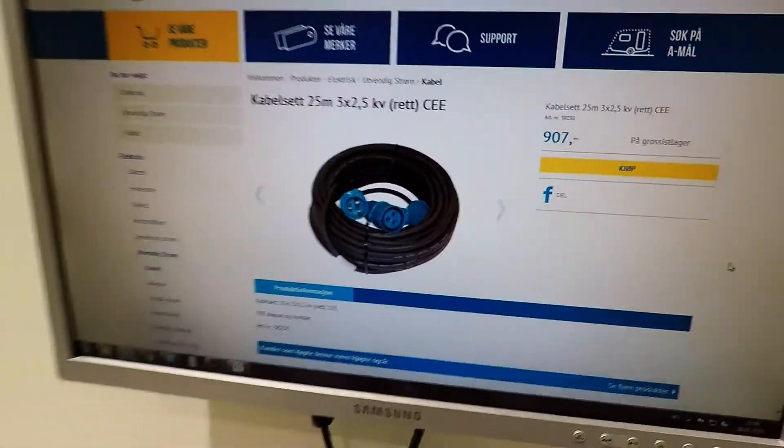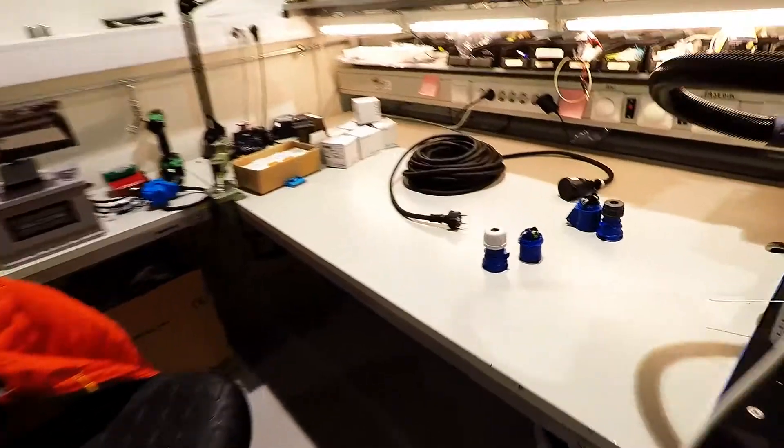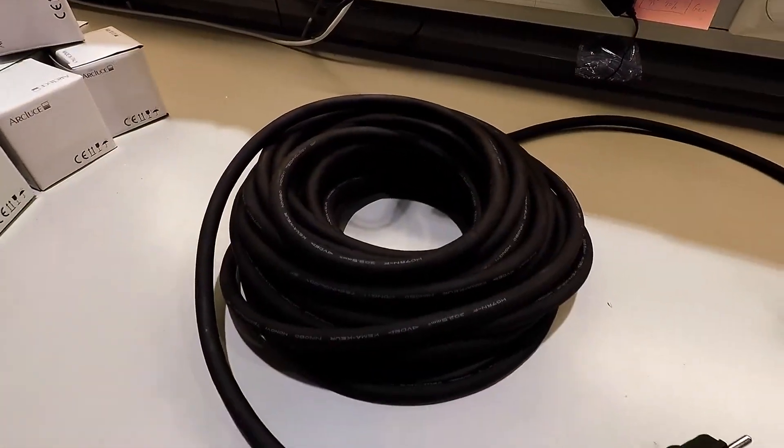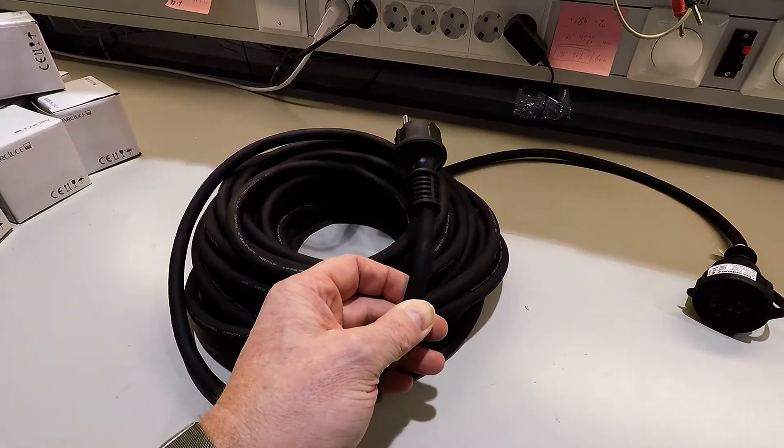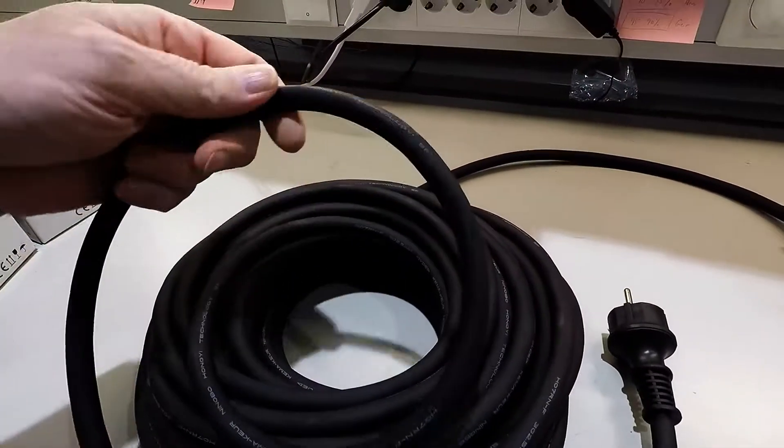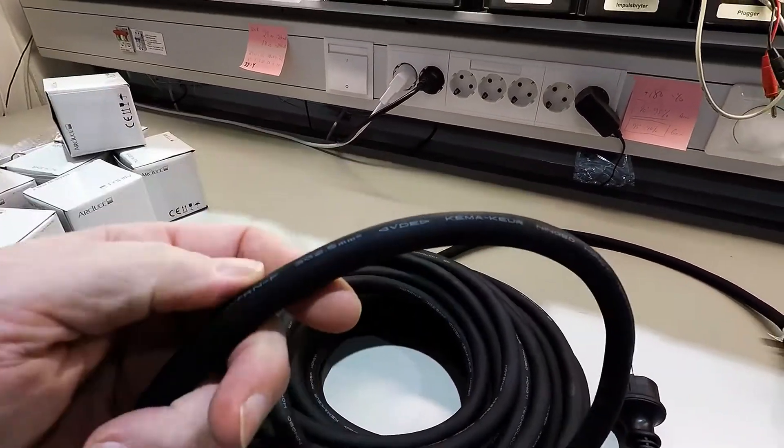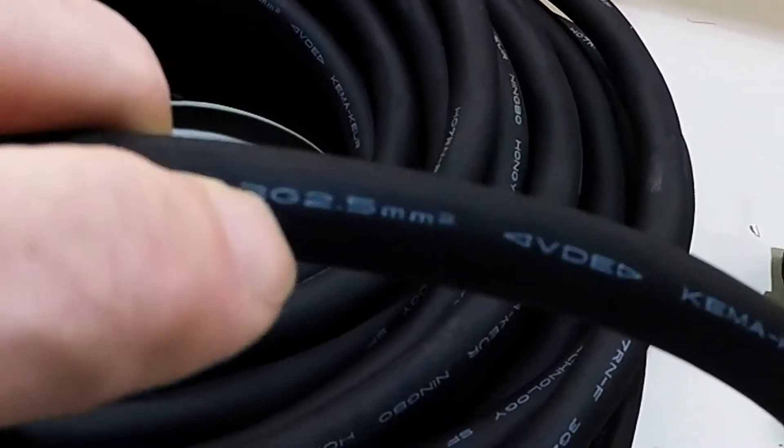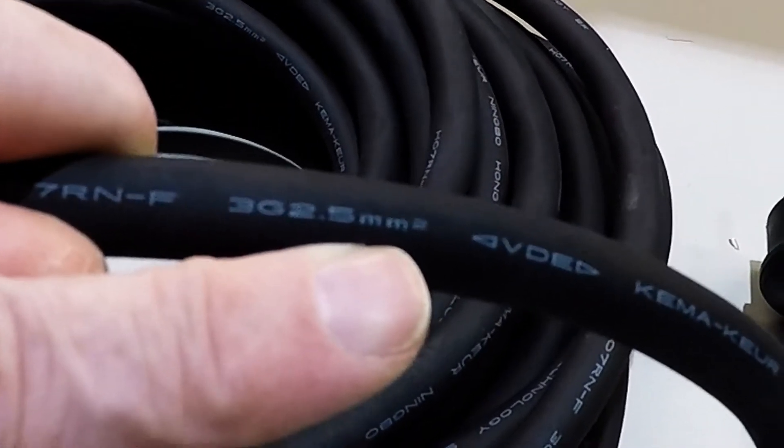And you can make one of your own, on your own, by just buying the standard extension cord. But it's very important that you get the one which has the, where is it saying? Here it is. 2.5 millimeter wire.